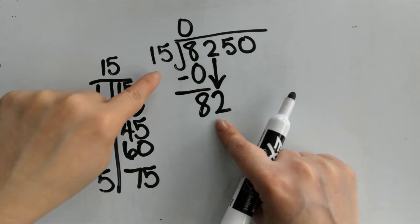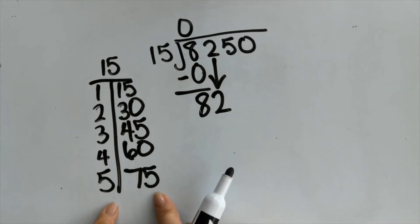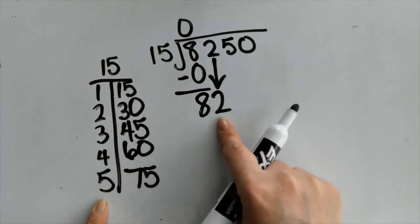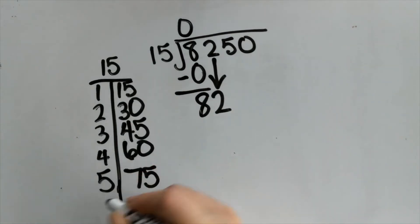8 minus 0 is 8. I'm going to bring down this 2. The minute I bring down, I'm going to divide again. So now it's 82 divided by 15. Now I can go back to my chart. I've already got this all worked out. So I know that when I try to make five groups of 15, I needed 75 marbles, but in this case they say I have 82.